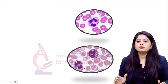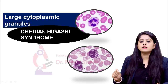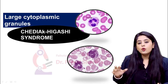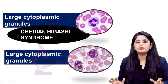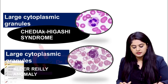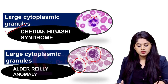The next one — there are large cytoplasmic granules in the first image, and I hope you can recall this was seen in Chédiak-Higashi syndrome. Remember that condition in phagocytosis where there was defective phagolysosome formation — these large cytoplasmic granules are seen. Next, in this last one, there are also large cytoplasmic granules covering the entire neutrophil — this is seen in Alder-Reilly anomaly. So if you see a few of these granules, think of Chédiak-Higashi. If you see many granules covering the entire neutrophil, think of Alder-Reilly anomaly.